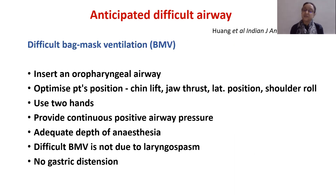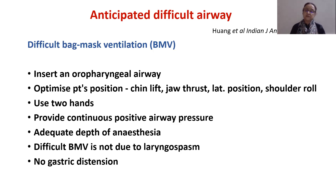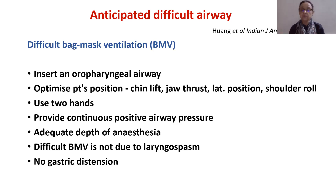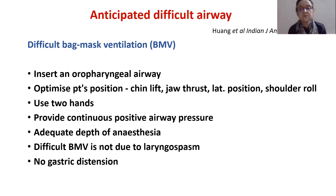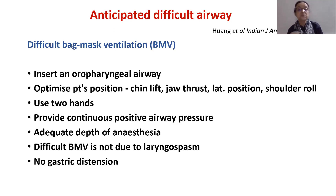Anticipated difficult airway management requires a structured plan — Plan A, Plan B, Plan C. If there is difficult bag-mask ventilation, insert an oropharyngeal airway, optimize patient position, use two hands, give CPAP, and ensure adequate depth of anesthesia; otherwise, laryngospasm may occur. Also check for gastric distension, as this can splint the diaphragm and further impede bag-mask ventilation.